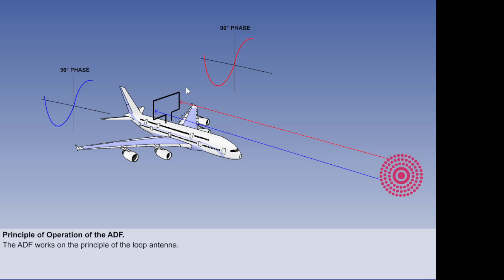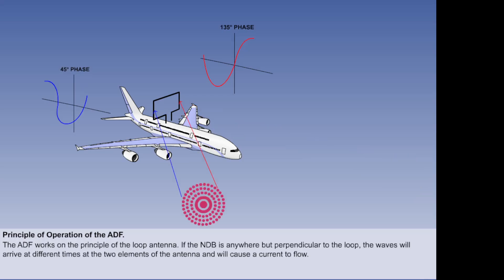If the NDB is directly ahead or behind the loop, then the waves will reach both sides of the antenna at the same time and there will be no voltage difference. If the NDB is anywhere but perpendicular to the loop, the waves will arrive at different times at the two elements of the antenna and will cause a current to flow.